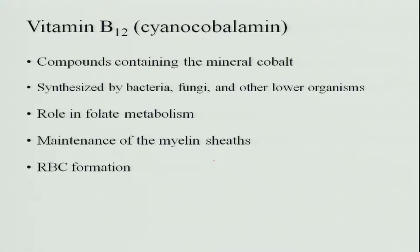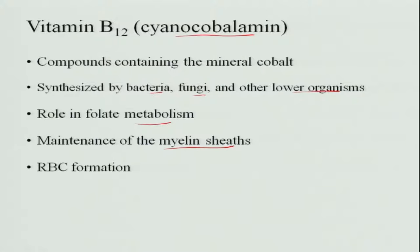Vitamin B12 is a very important vitamin called cyanocobalamin because it contains cobalt in its structure. It is synthesized by bacteria, fungi and other lower organisms, and it can be synthesized in the large intestine of our body. The role of vitamin B12 is that it plays an important role in folate metabolism and the maintenance of myelin sheath. Since folic acid is very important for myelin sheath formation, B12 is also indirectly very important for it.